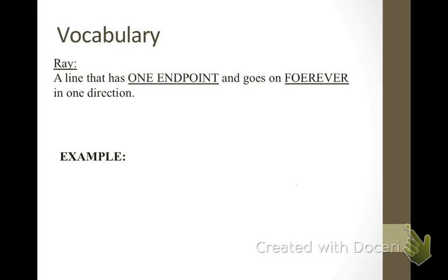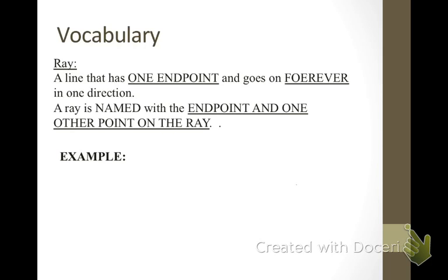A ray is a line that has one end point and goes on forever in one direction. A ray is named with the end point and one other point on the ray. Now, this is rather important. The name of a ray always starts with the end point.